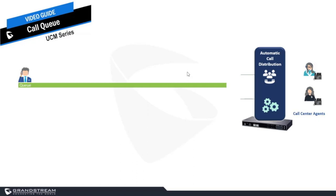Let's look at this example to help us understand how calls get processed through the call queue. The call queue uses what we call an Automatic Call Distributor or ACD to control the flow of callers, dispatch calls to the agents based on the predefined ring strategy, and hold queued calls in first-in first-out order until an agent is available to take the call. In this scenario, I have a call queue with two static agents and the ring strategy is set to ring the top agent first. When a call is routed directly to the call queue, the UCM checks the availability of the agents and decides which agent to forward the call to based on the ring strategy set up for the call queue.